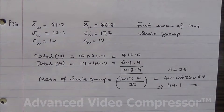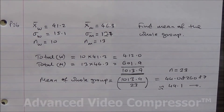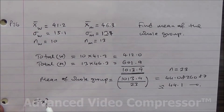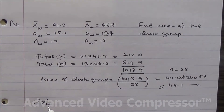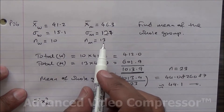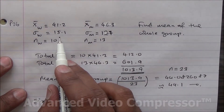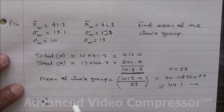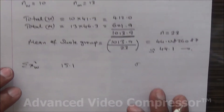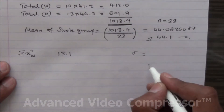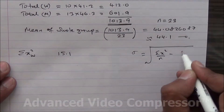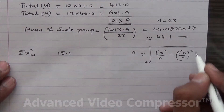For the second part, we need to find the summation of x squared for the women and summation of x squared for the men individually. We use the formula: the standard deviation equals the square root of (summation of x squared over n) minus (summation of x over n) all squared.